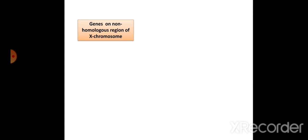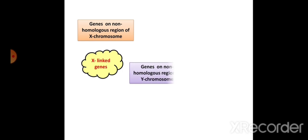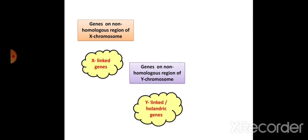Genes on the non-homologous region of the X chromosome are called X-linked genes. Genes on the non-homologous region of the Y chromosome are called Y-linked genes. Y-linked genes are also said to be holandric — this is a one-mark question: holandric genes are those present on the Y chromosome and inherited only through the Y chromosome.